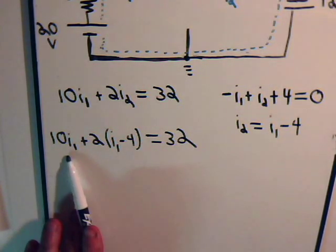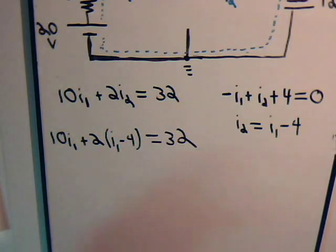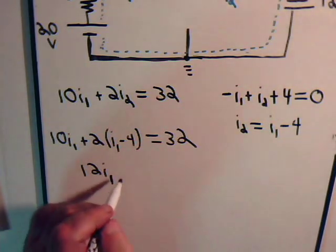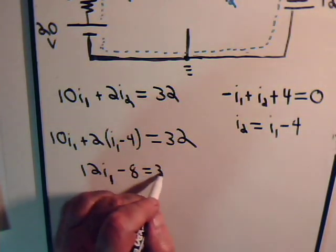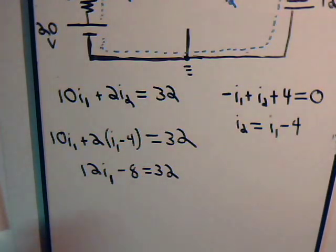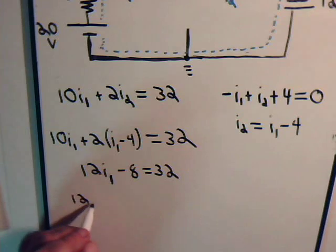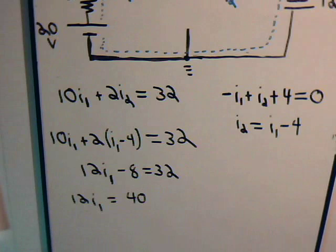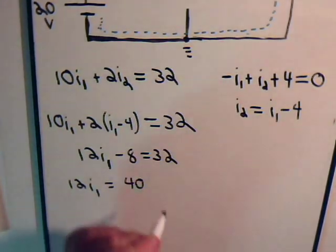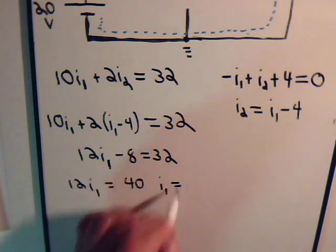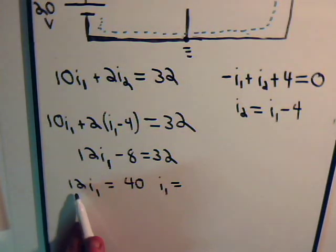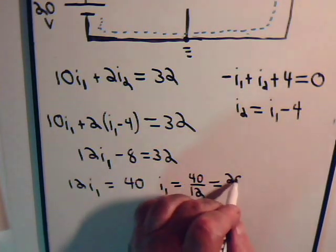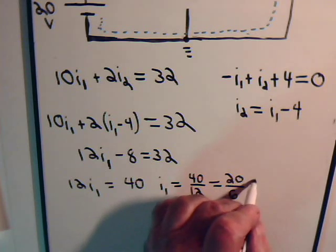So here we have 10 times I1 plus 2 times I1, so 12I1 minus 8 equals 32, or 12 times I1 equals 40. It looks like current I1 equals 40 divided by 12, or 20 divided by 6 amps.